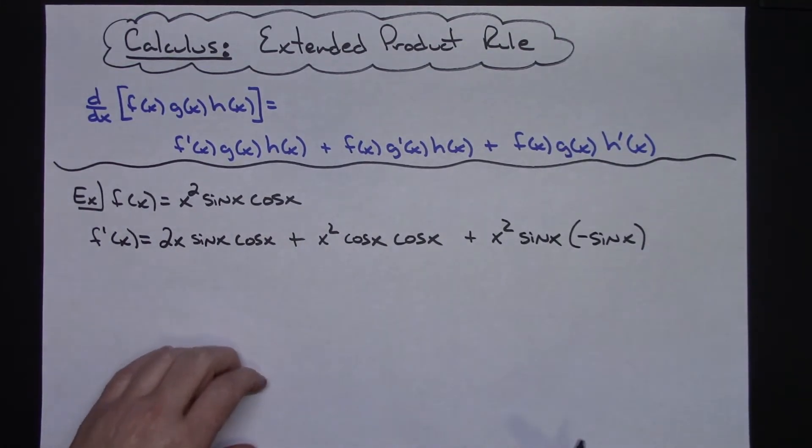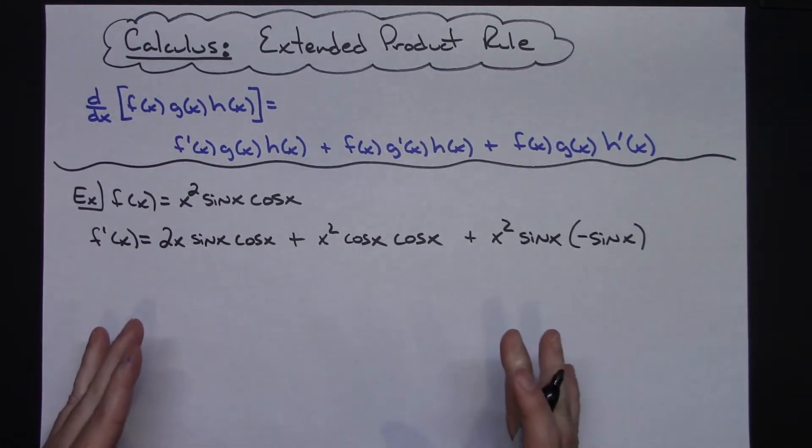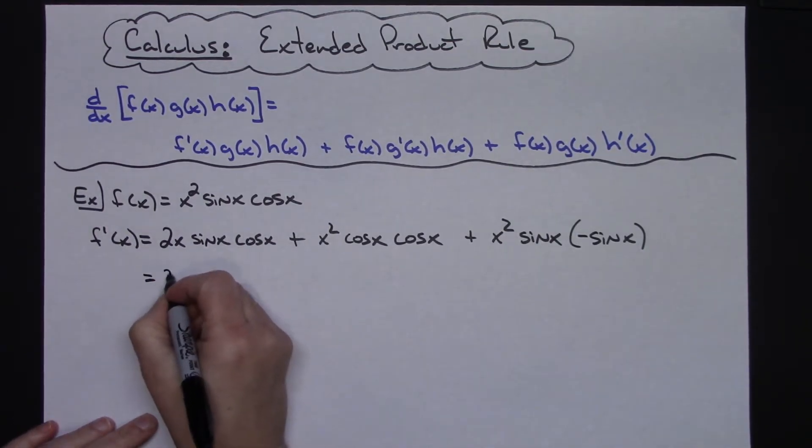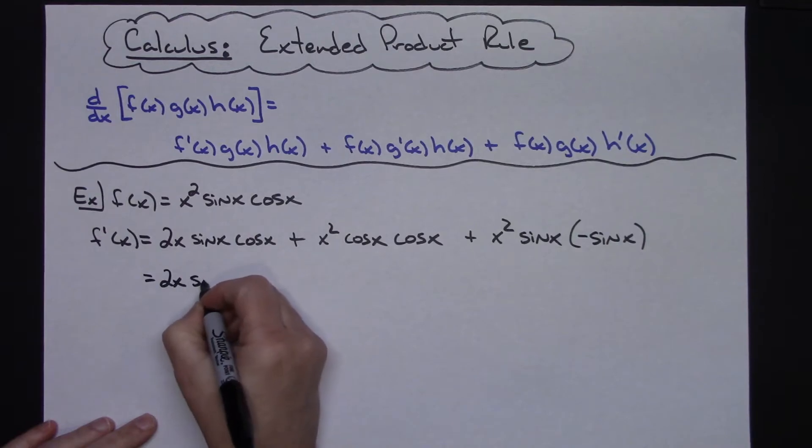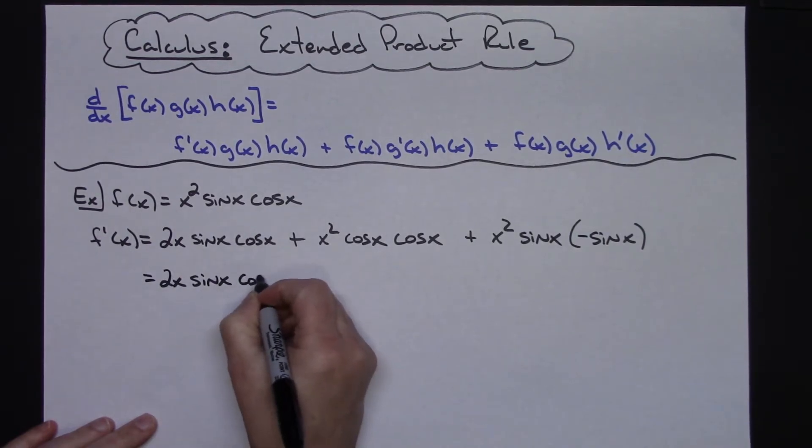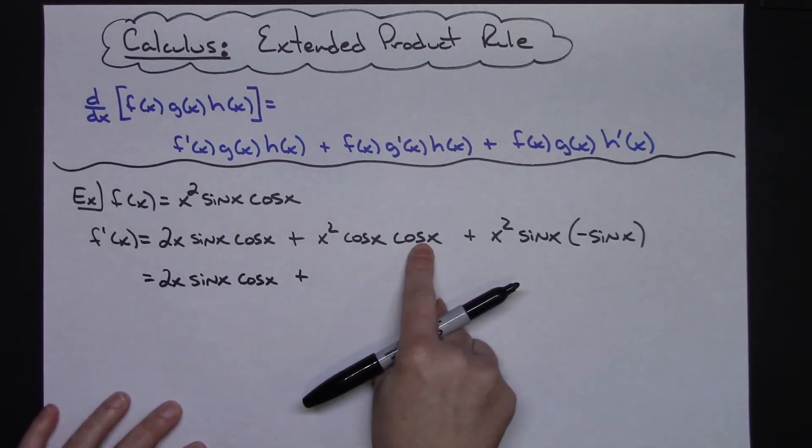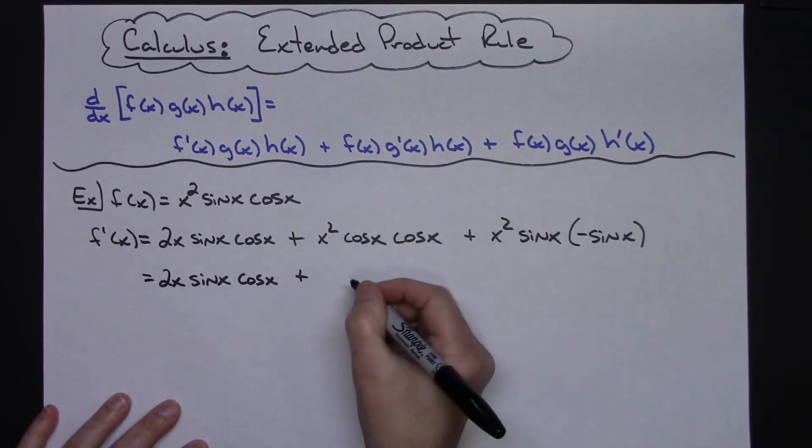Now from here to the end just going to do a little cleaning up of things. On this first term I'm not going to do anything to change it, so 2x sin x cos x. On the middle term I have a cosine x and cosine x, so I'm going to write that as a squared term: x² cos² x.